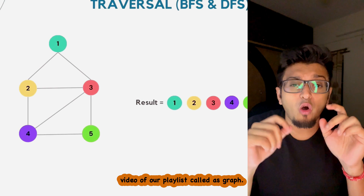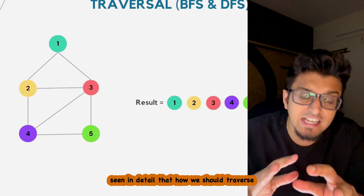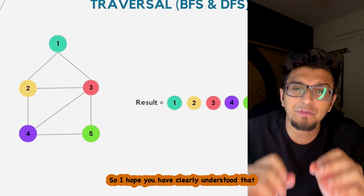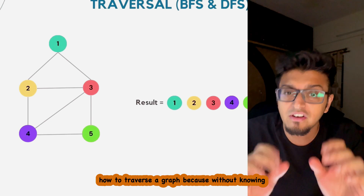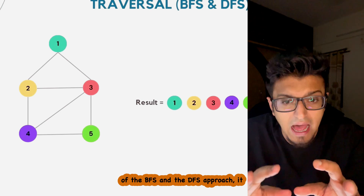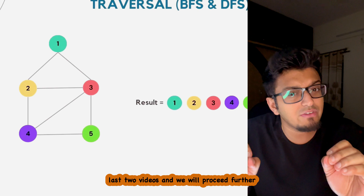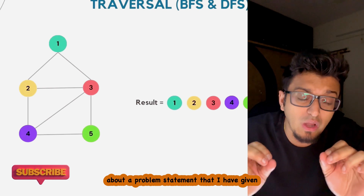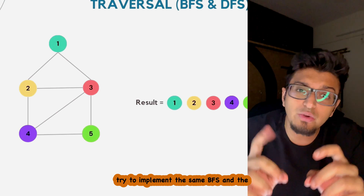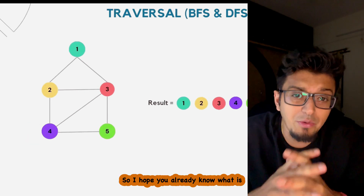Hello guys, welcome back to the sixth video of our playlist on graphs. In our last two videos, we saw in detail how to traverse a graph using BFS and DFS algorithms. This video is about a problem I gave you in the previous video: try to implement the same BFS and DFS algorithm on a disconnected graph.